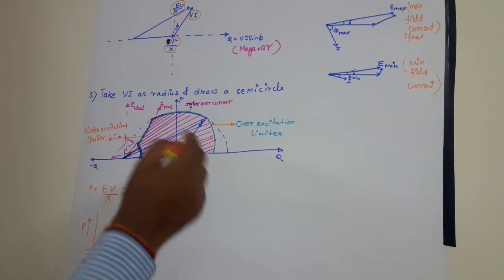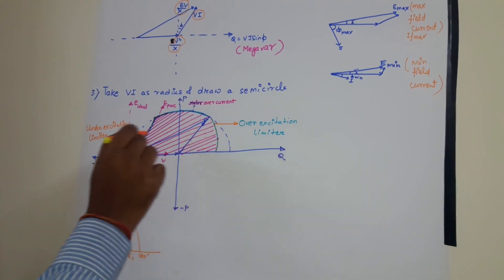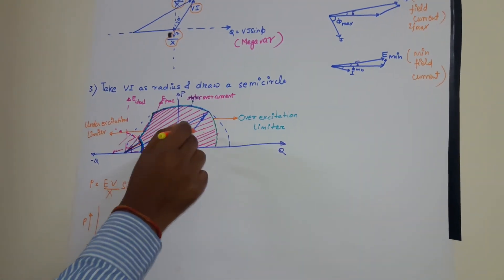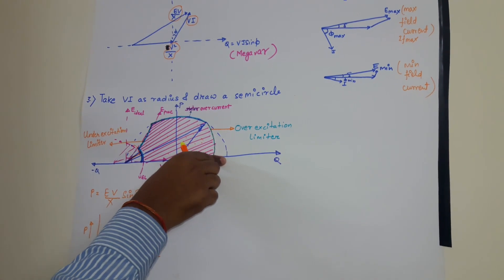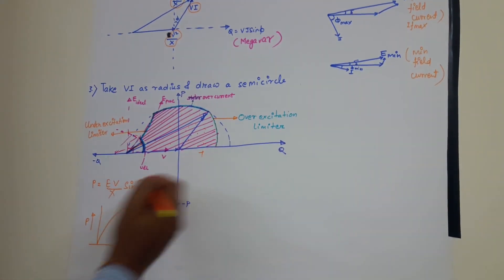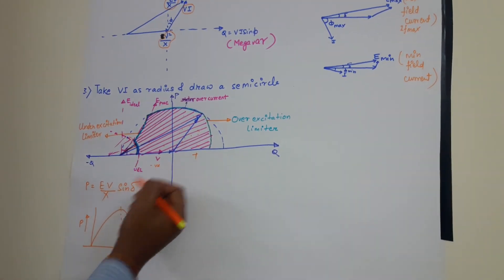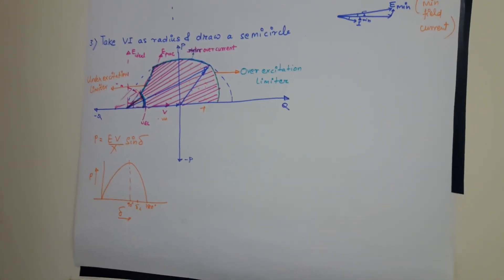Mostly during day time, the generator operate in this zone. And during night time, the generator is sending reactive power. Q is positive. And during night, the generator is absorbing reactive power. So Q is negative.